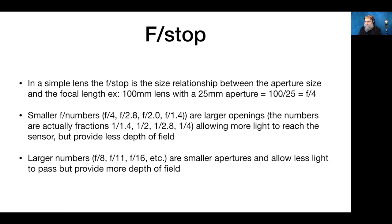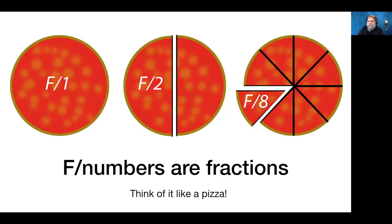If you can't remember which way to go, think of pizza. F2 is a larger opening than f8. When you cut the pizza into two slices, you get much bigger slices than when cut into eight — so one-half is a larger lens opening than one-eighth.